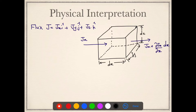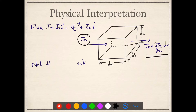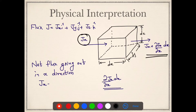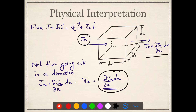We can say that jx is going into this infinitesimally small volume from the left side, and the flux coming out from the right face of this small volume is jx plus ∂jx/∂x times dx, where dx is the infinitesimally small length in the x direction. So the net flux going out of this volume in the x direction is: (jx + ∂jx/∂x · dx) minus jx, which gives ∂jx/∂x · dx.